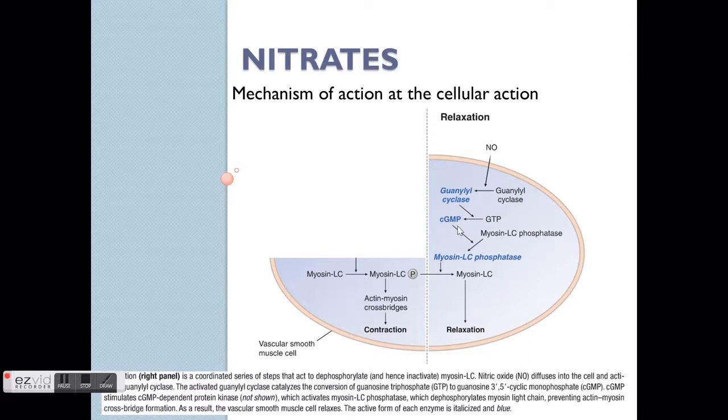This causes an increase in the cyclic GMP, which then activates this myosin-like chain phosphatase. As a result, it dephosphorylates the myosin-like chain to cause a relaxation in the cells, in the blood vessels.